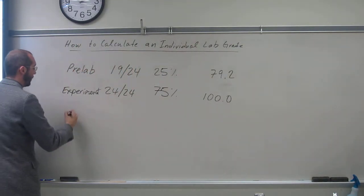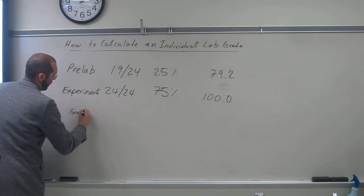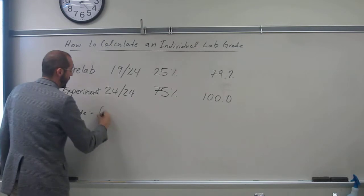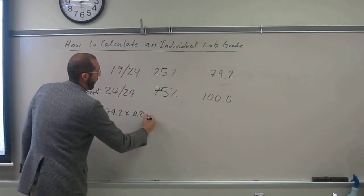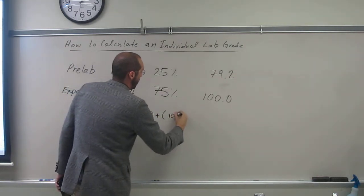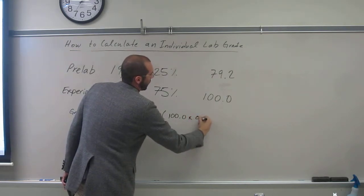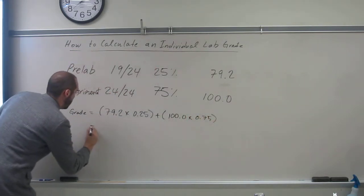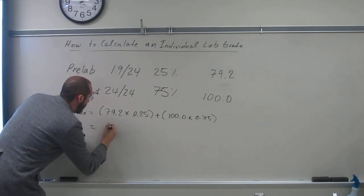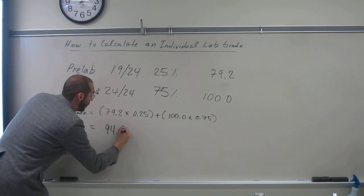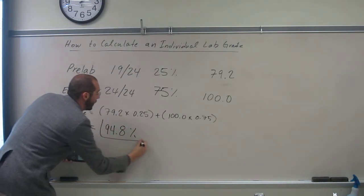So, now what do I do to calculate the lab grade? The grade is going to be 79.2 times 0.25 plus 100.0 times 0.75. And I get a grade of 94.8 percent on that individual lab.